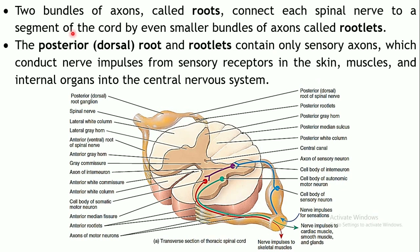There are two bundles of axons known as roots which connect each spinal nerve to the segment of the spinal cord. It is not a single structure connecting to the spinal cord — there are two bundles called roots. Further, as they move closer to the spinal cord, they are subdivided into smaller bundles of axons called rootlets.